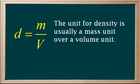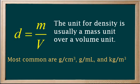The unit for density is usually a mass unit over a volume unit. The most common density units are grams per centimeter cubed, grams per milliliter, and kilograms per meter cubed, also known as kilograms per cubic meter.